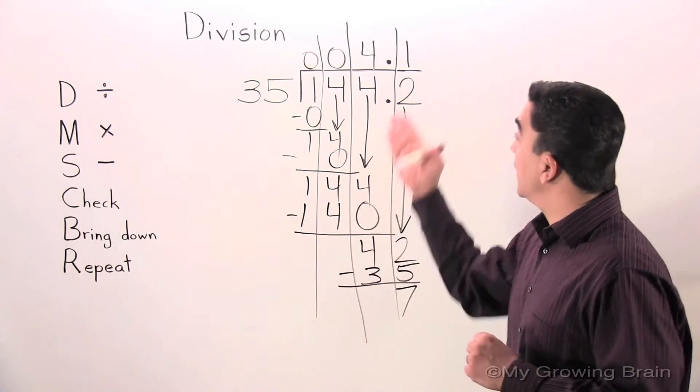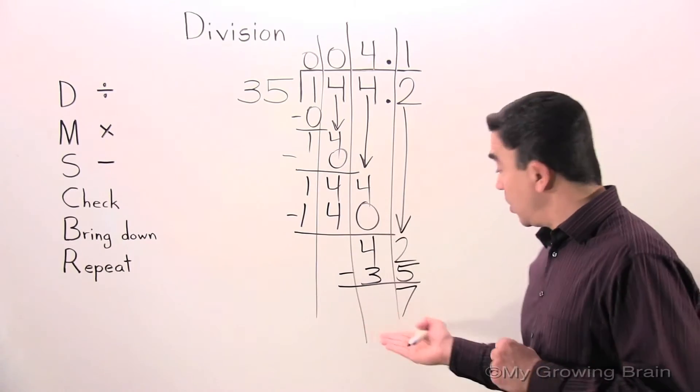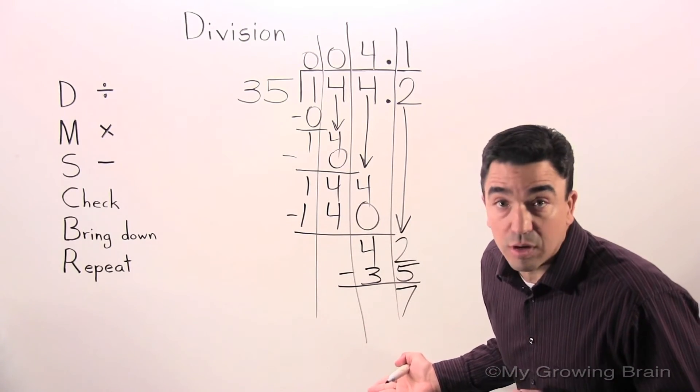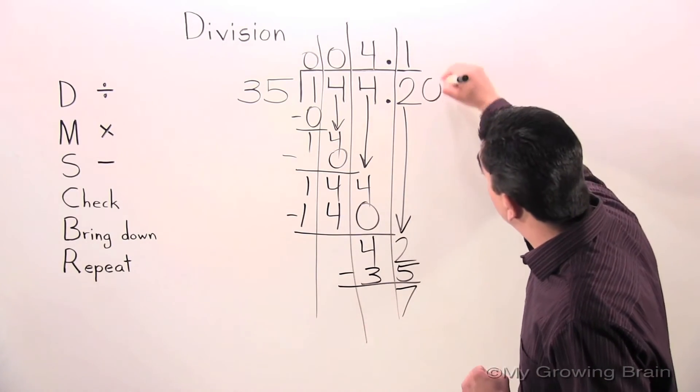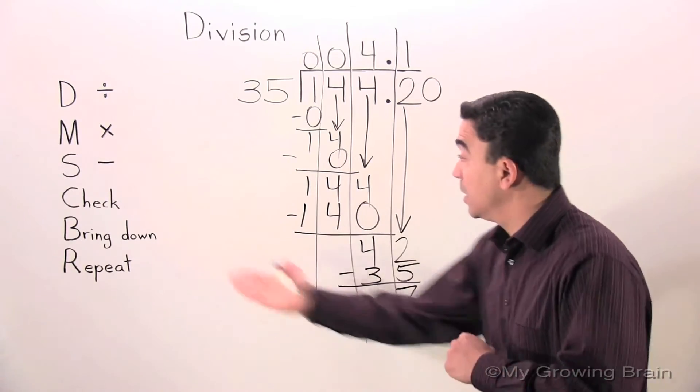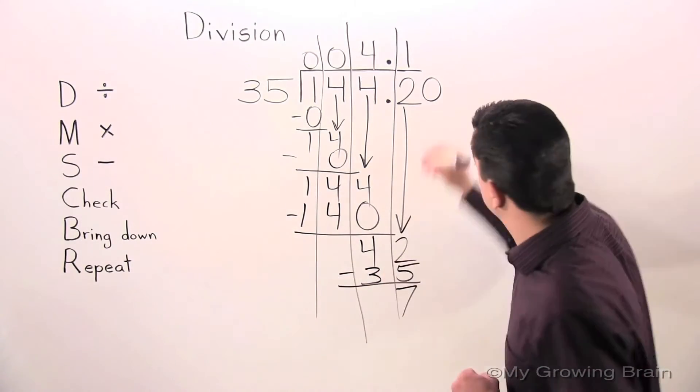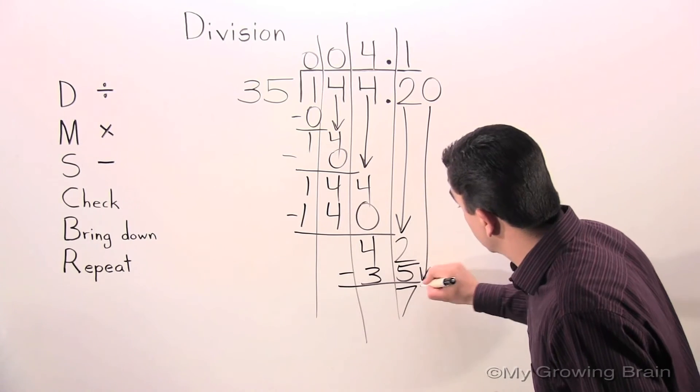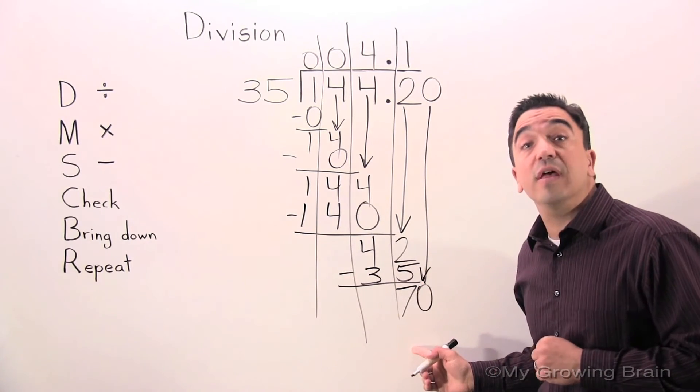But once again, in a division problem where we have a decimal, we can't have a remainder. Therefore, we will add a 0 and bring it down.